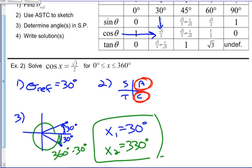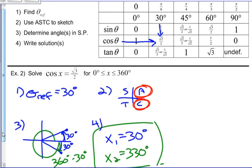Those should be our two solutions, and again we can check them on the calculator. Make sure you're in degree form. So the steps are: find theta ref, use ASTC which means just figuring out where it should be positive or negative, determine the angles in standard position, and write them down.